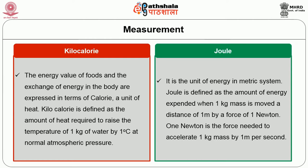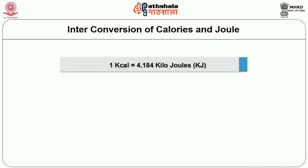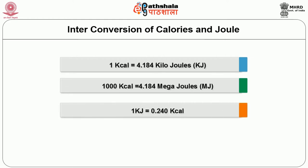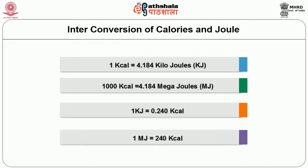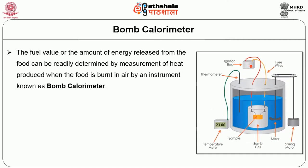1 newton is the force needed to accelerate 1 kg mass by 1 meter per second. The interconversion of calories and joules: 1 kilocalorie equals 4.184 kilojoules, or 1000 kilocalories is equivalent to 4.184 megajoules. 1 kilojoule equals 0.24 kilocalories, and 1 megajoule equals 240 kilocalories.